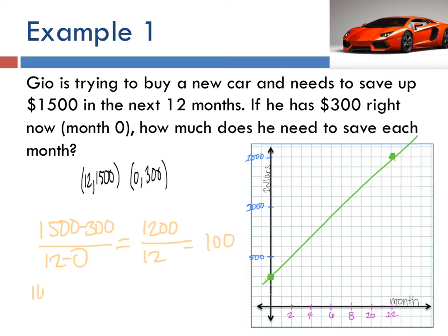This means that Gio needs to save at least one hundred dollars per month to save enough for his car if he wants to get it in one year. So every month that you go up, you need to save one hundred dollars.